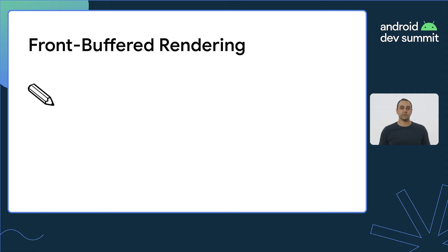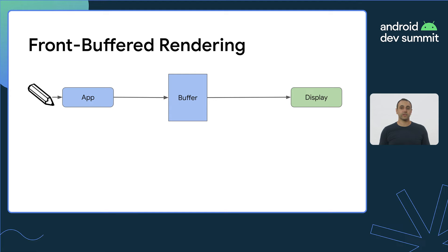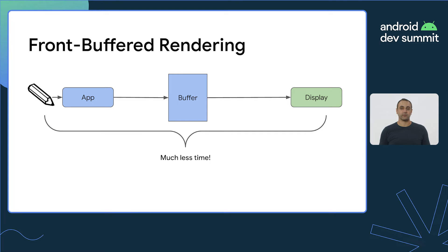Android has also supported front-buffered rendering for a number of releases. In this scenario, a buffer is simultaneously being presented by the display while being rendered by the application. This avoids the latency of multi-buffered rendering pipelines but introduces the possibility for visual artifacts. Therefore, this is not recommended for general-purpose graphics rendering.